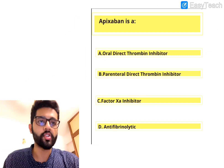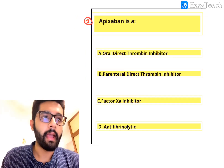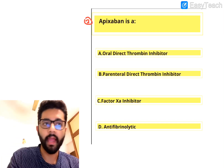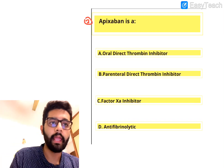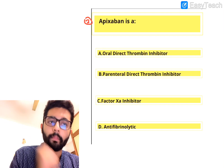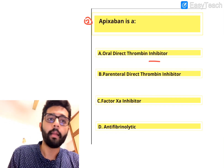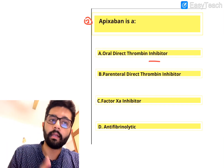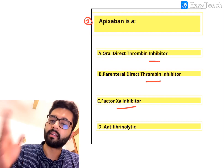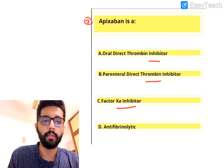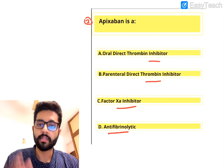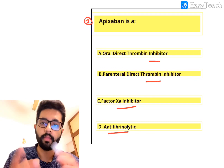Question number two: Apixaban is a — A. Oral direct thrombin inhibitor. B. Parenteral direct thrombin inhibitor. C. Factor 10A inhibitor. Or D. Antifibrinolytic. Pause, think, and then we'll discuss.